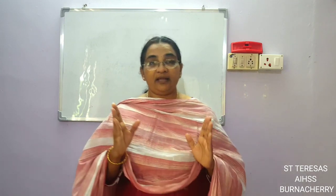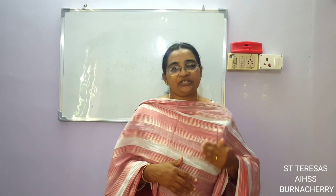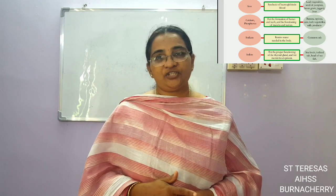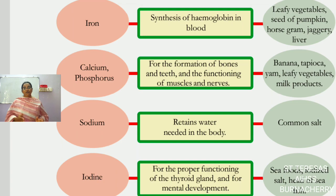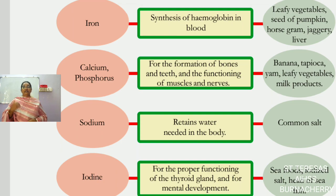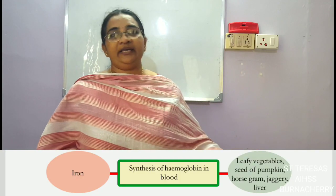Here we are going to learn another table. In this class, we are going to learn a table which is given on page number 66 of your textbook. Open page number 66. There you can see a few minerals listed on one side, their uses on another side, and the food items from which we get them in three columns.